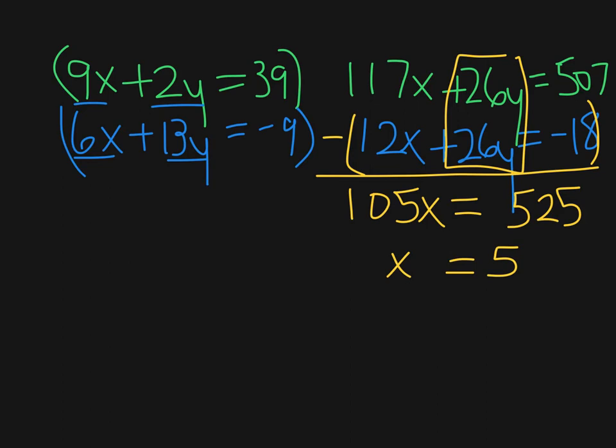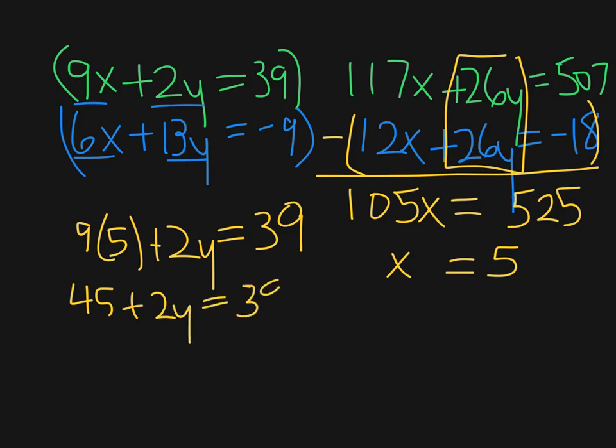I can then plug that into either of the two equations up there. If I plug it in, it's going to be 9 times 5 plus 2y equals 39. 45 plus 2y equals 39. I'll subtract 45 from both sides. 2y equals negative 6. Y is going to be equal to negative 3. So I believe my point is going to be 5 comma negative 3.